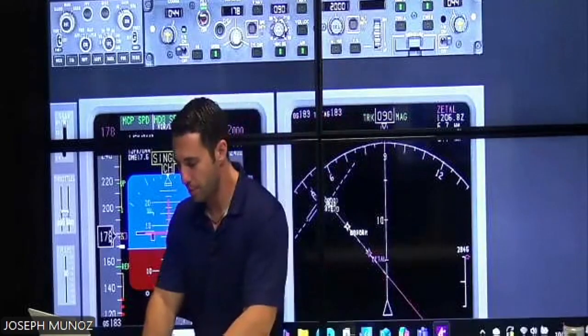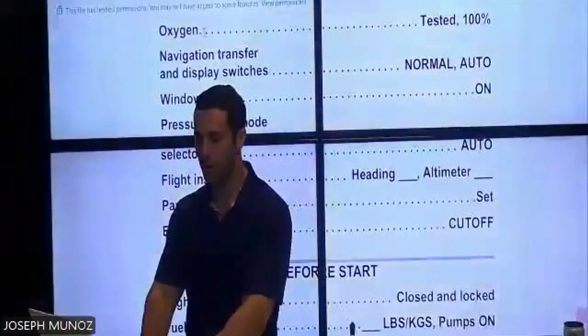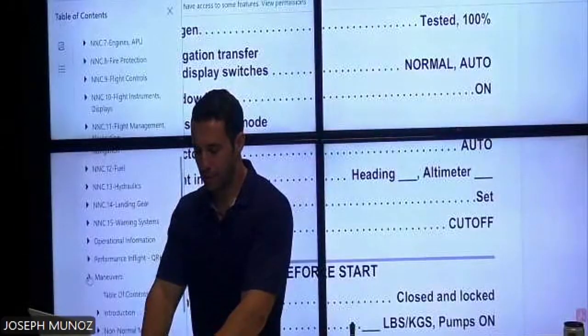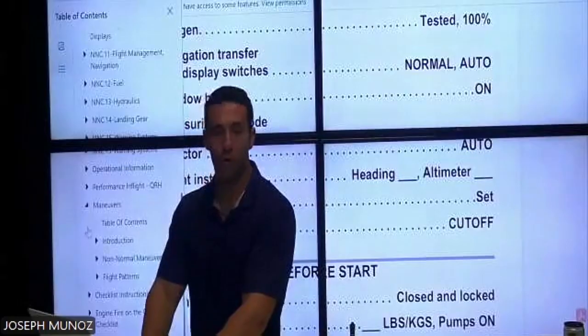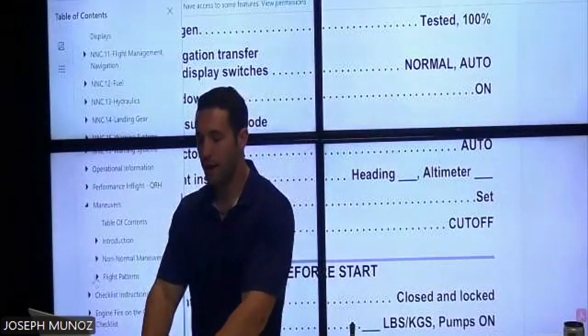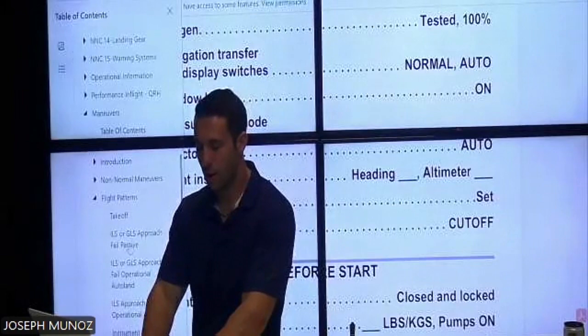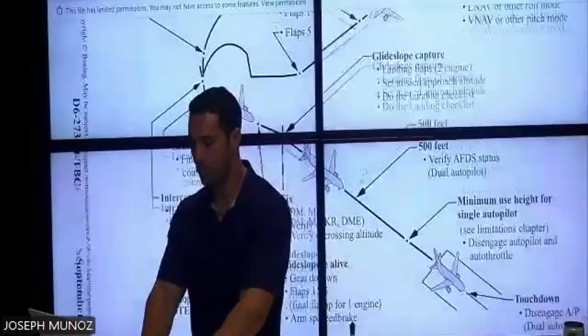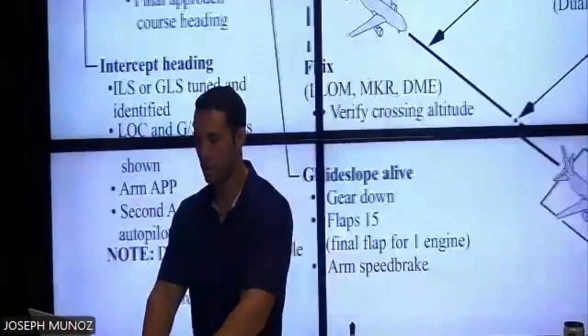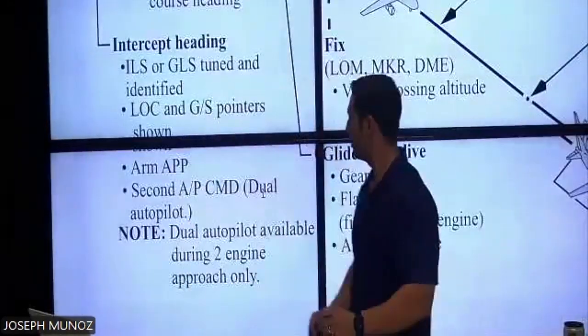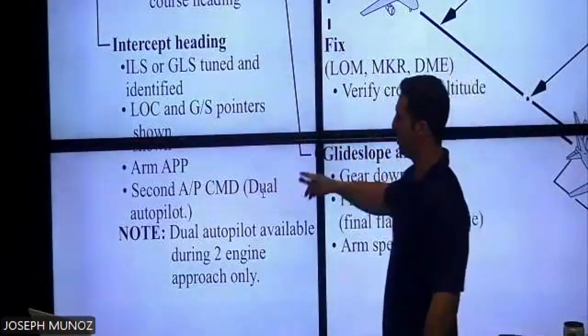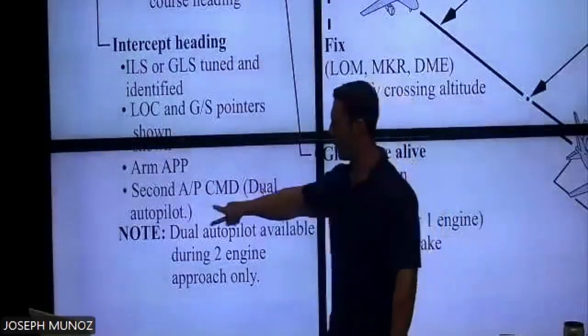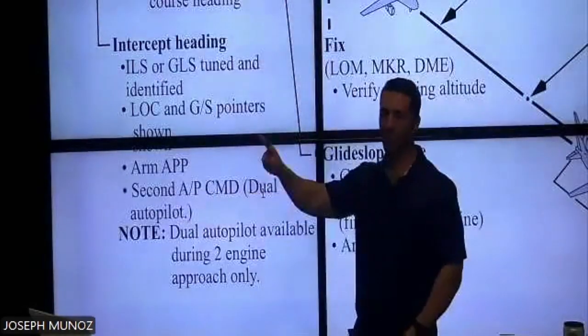So I do advocate for that. And there's nothing wrong with it either because in the QRH, which is behind me here, there's a section titled Maneuvers, Flight Patterns, ILS Approach. And it does specifically say that when I'm cleared for the approach, second autopilot command, dual autopilot. I can put the second one on.